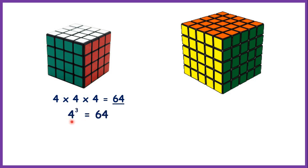So we can say that 4 cubed is 64, and 5 times 5 times 5 is 125 because 5 times 5 is 25, then 25 times 5 is 125.